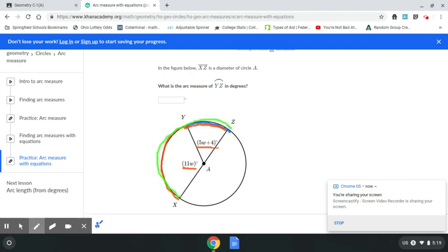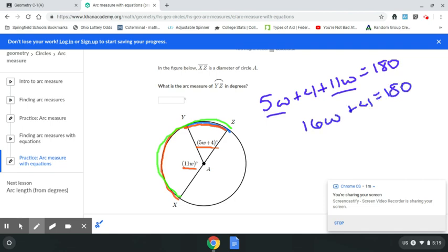A semicircle is half of a circle. And if it's half a circle, that means it's 180 degrees. So those two angles, those two arcs have to come together to make 180. So our equation for this one should be 5W plus 4 plus 11W equals 180. We combine like terms. 5W plus 11W is 16W plus 4 equals 180. I subtract the 4 over. 16W equals 176. And if I divide, I get W equals 11.